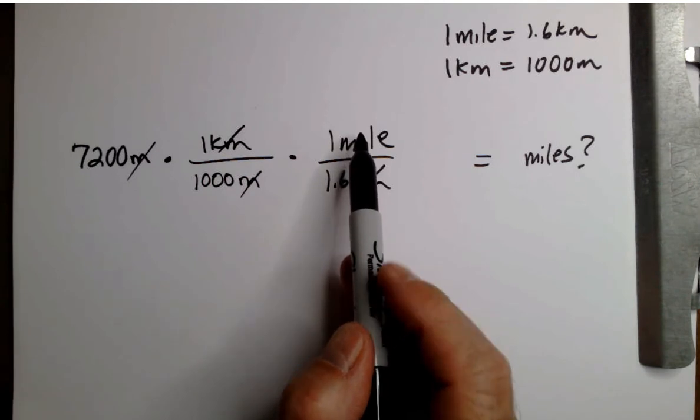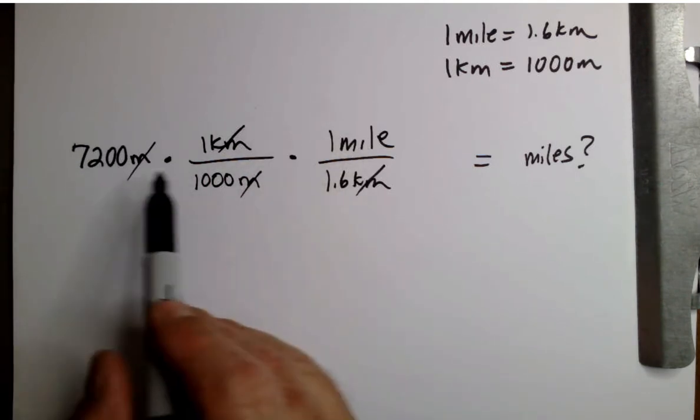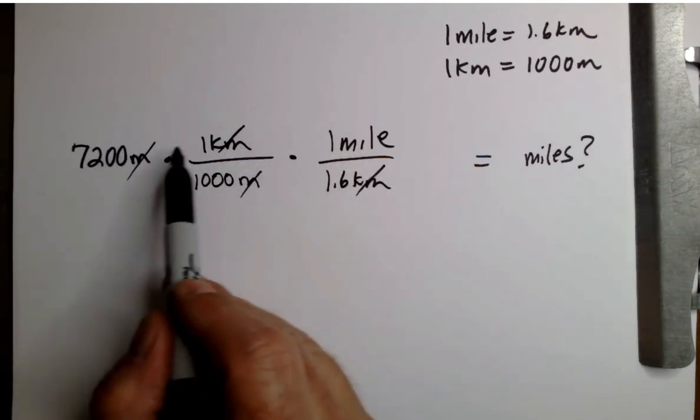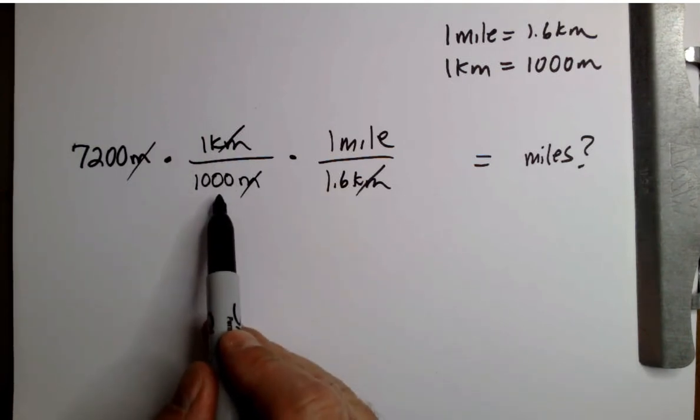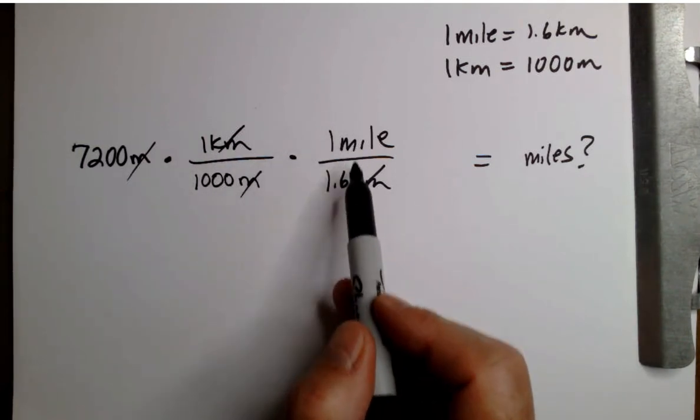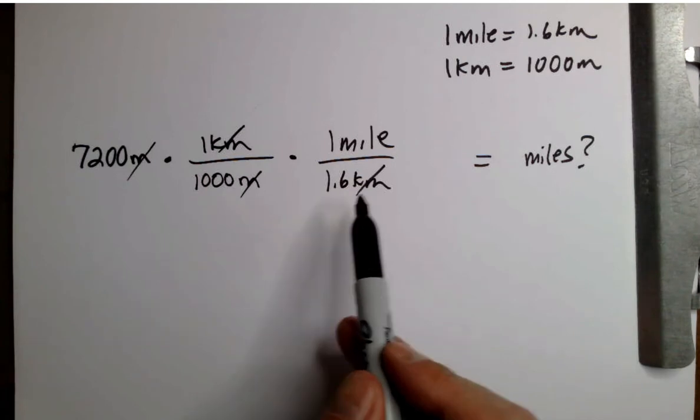So we're going to do that, or we could do it kind of step-wise. Why don't we do that? 7200 times 1 divided by 1,000 and then hit enter, times 1 divided by 1.6, hit enter, and that will give us the correct answer I think.